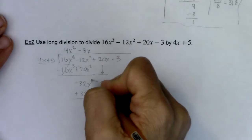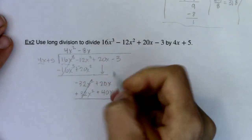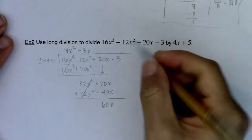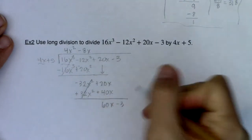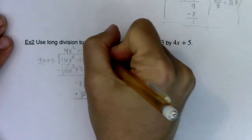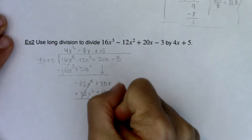Cancels. I'm looking at 60x. Degree 1, degree 1, they're the same. I've got to keep on going. I'll bring the 3 down. 4x to get to 60x is going to be 15.